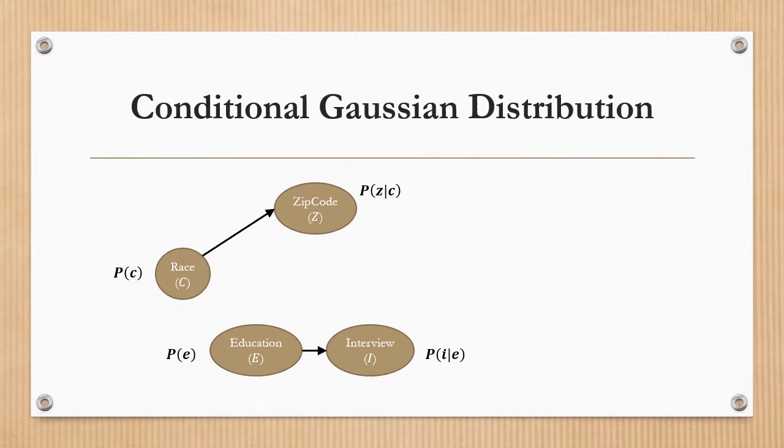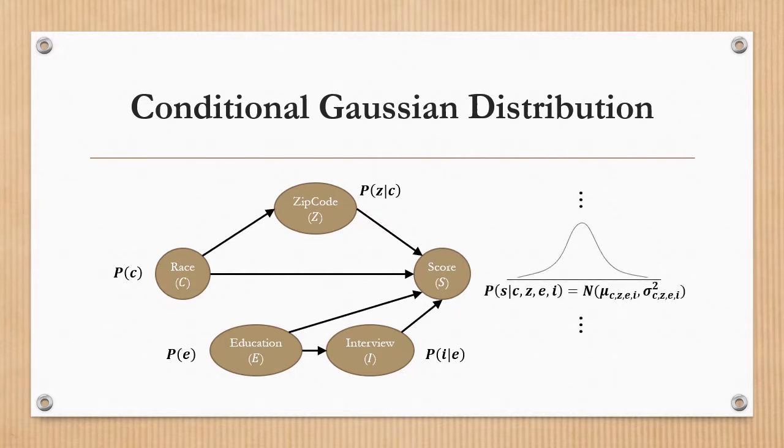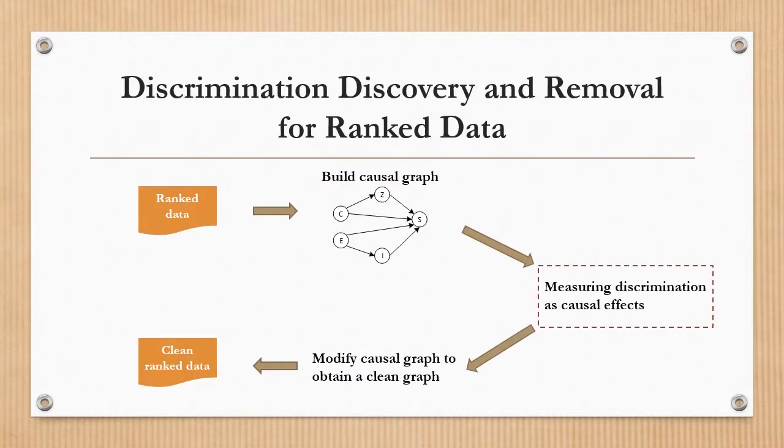Secondly, as a node in the causal graph, we associate the score with a set of conditional Gaussian distributions instead of the conditional probability table. Each conditional Gaussian distribution is obtained from the data using standard statistical estimation techniques.